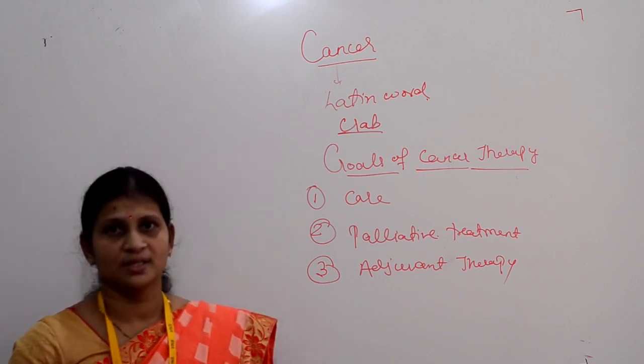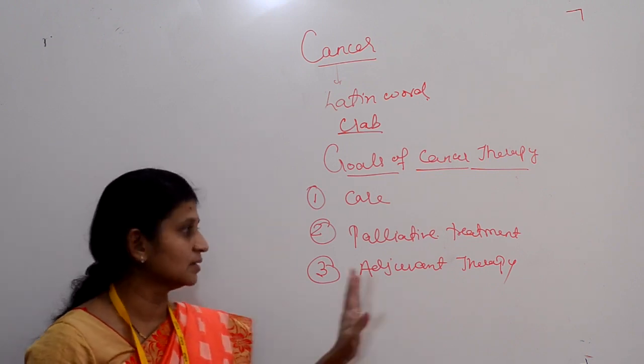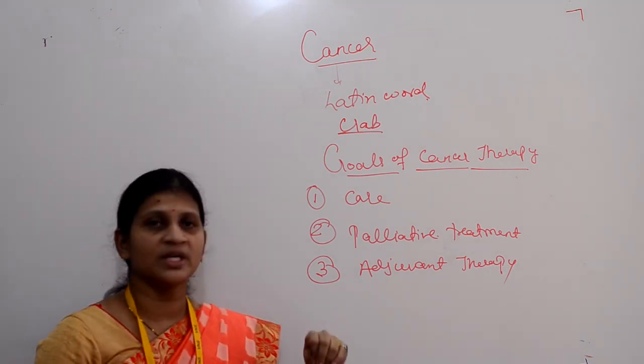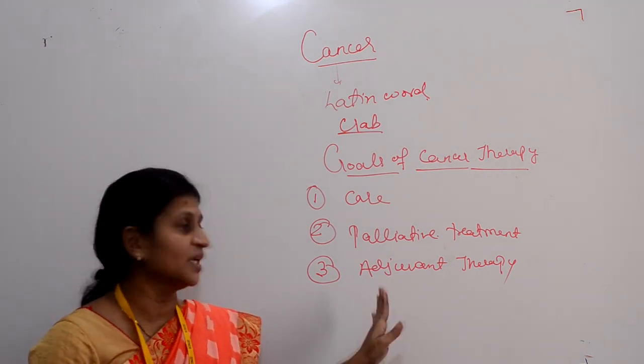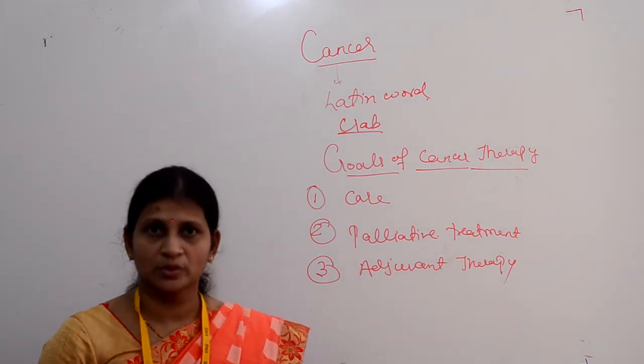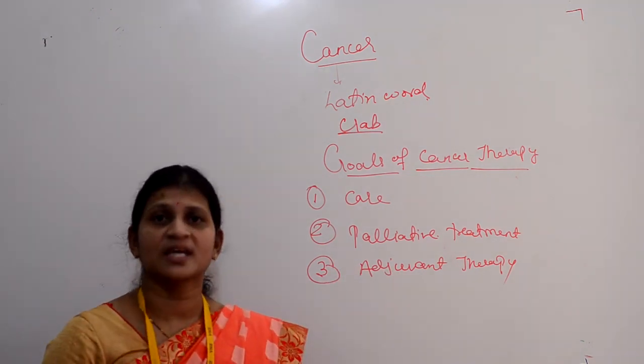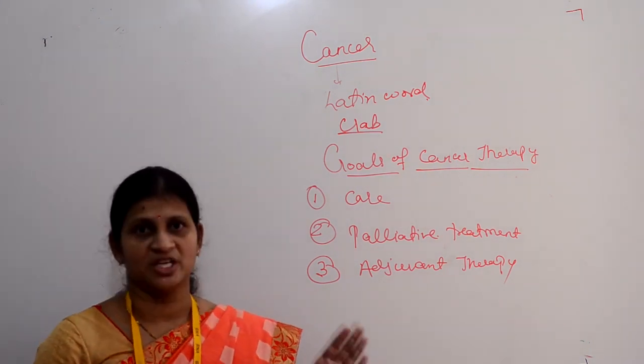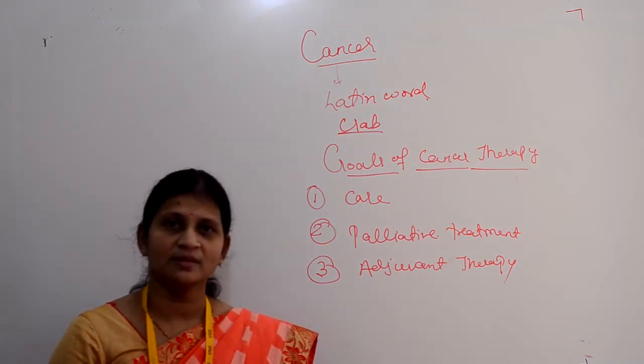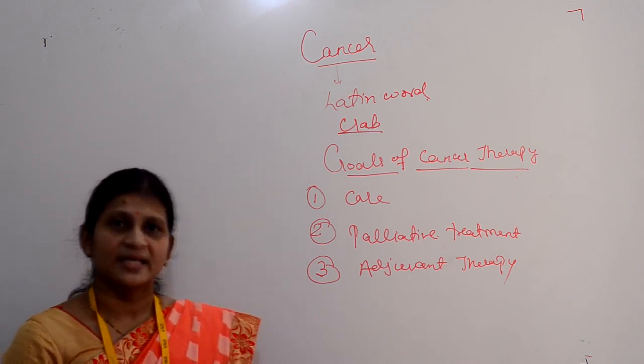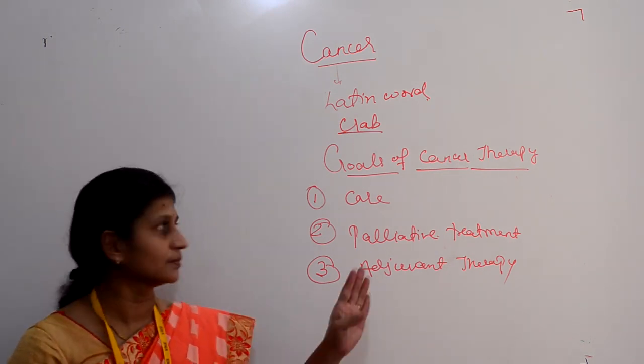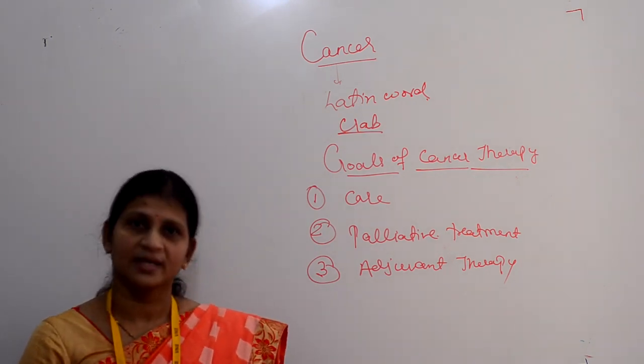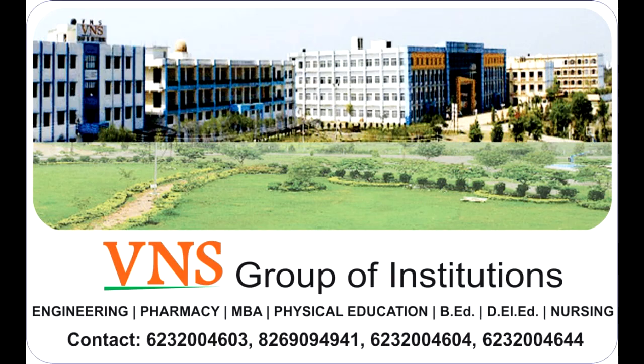In case of adjuvant therapy, the patient is advised to take immunostimulant drugs or undergo radiotherapy and specialized types of chemotherapy to give complete care to the patient. Thank you everyone. In next class, we will discuss goals of cancer therapy in more detail and cell cycle kinetics. Thank you very much.